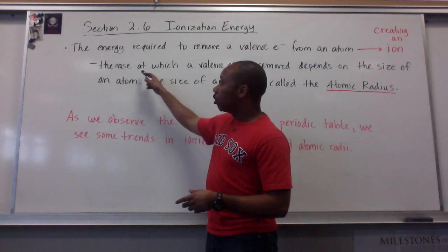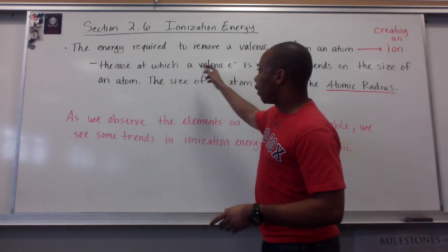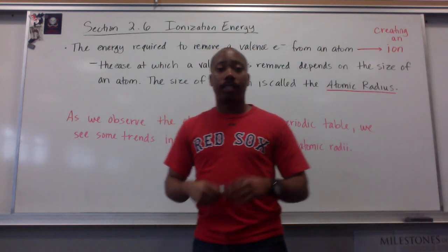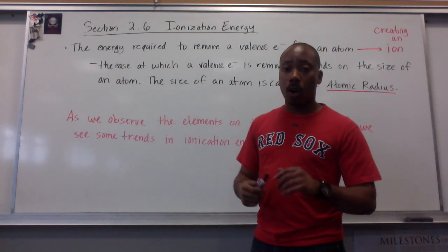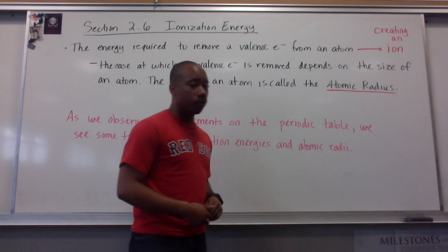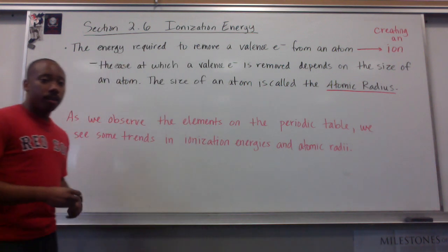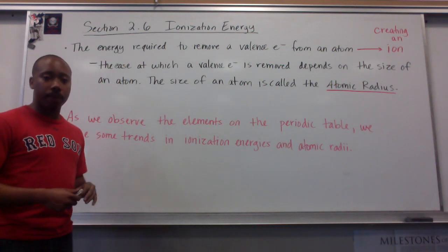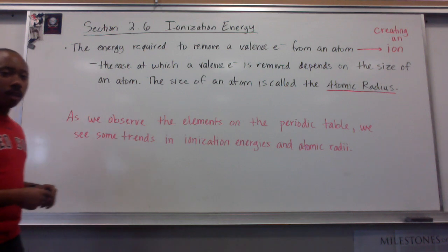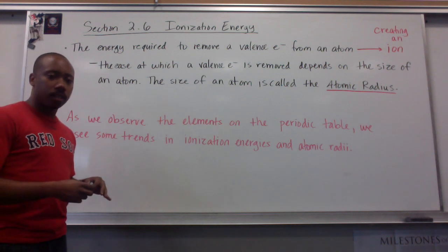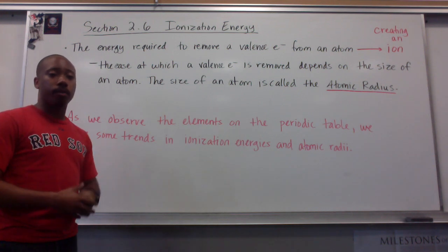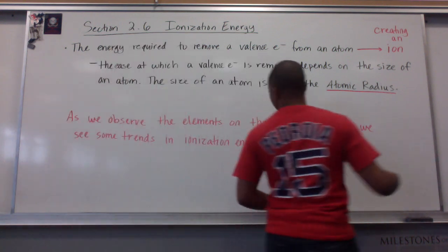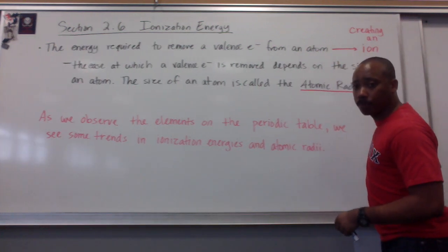Now the ease at which a valence electron is removed depends on the size of the atom. The size of the atom is called your atomic radius. Today we're going to observe the elements on the periodic table and see some trends in ionization energies and atomic radius. I'm going to talk about some of those trends you may see as you look at the periodic table.